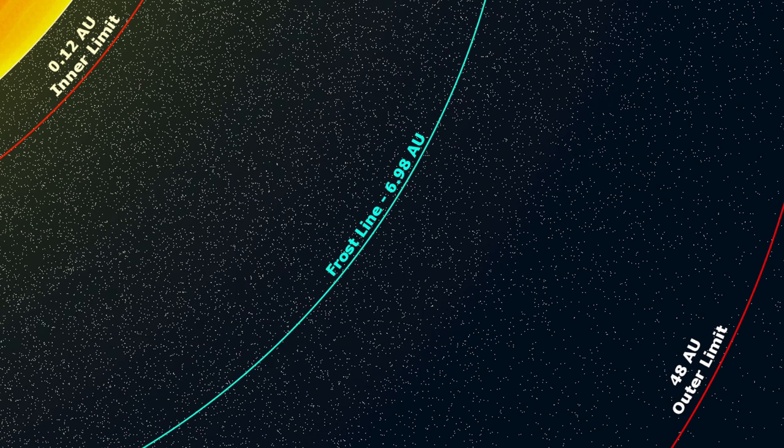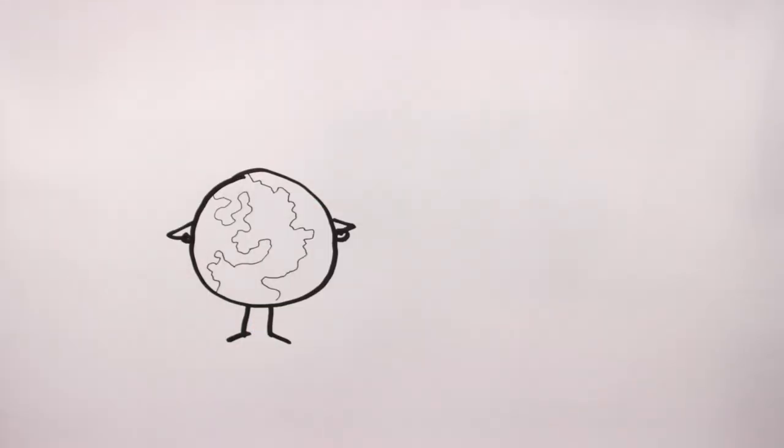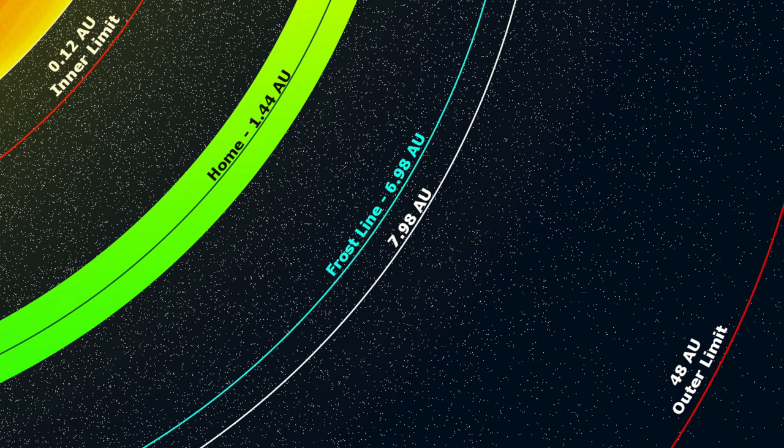Which I will put roughly here. Next up, our largest gas giant will form close to, but not on, the frost line. One to 1.2 AU away from the frost line is perfect. So let's say my system's largest gas giant orbits at 7.98 AU. Now it's time to stick in any pre-designed worlds. My world needs to orbit at 1.44, so that will go right about here.